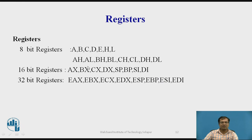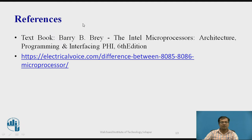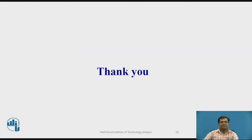In higher-version microprocessors, 32-bit registers are found, extended as EAX, EBX, ECX, EDX, ESP, EBP, ESI, and EDI. These are the references. Thank you.